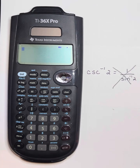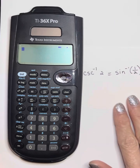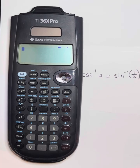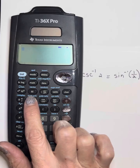The correct way to find cosecant inverse of 2 is to put sine inverse of the reciprocal of the value. So we do sine inverse of 1 half.